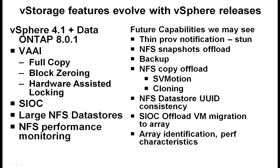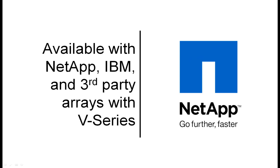vStorage features evolve with vSphere releases. In vSphere 4.1 with Data ONTAP 8.0.1, we add VAAI support with full copy, block zeroing, and hardware-assisted locking. We also add storage I/O control, large NFS data stores, and NFS performance monitoring, which are covered in a separate demo. All of these features are available with NetApp, IBM N series, and third-party arrays with vSeries in front.